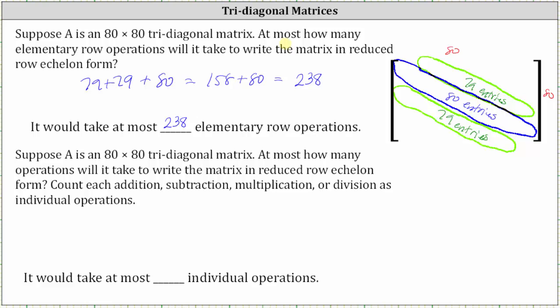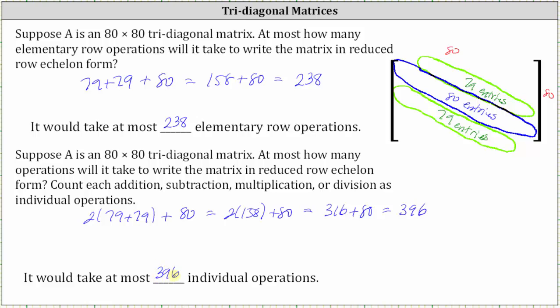For the last part, how many individual operations would it take for the 80-by-80 matrix, counting addition, subtraction, multiplication, or division individually? It would take up to two individual operations to get zeros above and below the main diagonal — that is two times (79 plus 79) — and then plus one individual operation per diagonal entry, so plus 80. This gives us two times 158 plus 80. Two times 158 is 316, and 316 plus 80 is equal to 396. It would take at most 396 individual operations to write the matrix in reduced row echelon form.